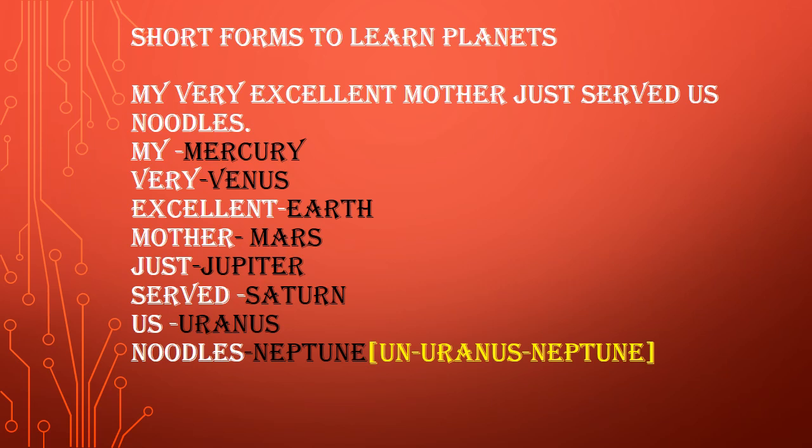My Very Excellent Mother Just Served Us Noodles. So: M for Mercury, V for Venus, E for Excellent — that's Earth, M for Mother — that's Mars, J for Just — that's Jupiter, S for Served — that's Saturn, U for Us — that's Uranus, and N for Noodles — that's Neptune.